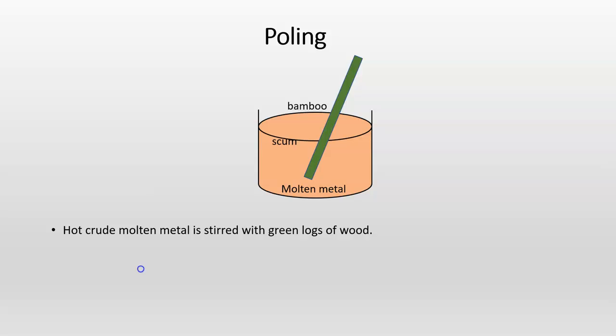The hot crude metal, which is in the molten state, is stirred with green logs of wood as shown in the figure.